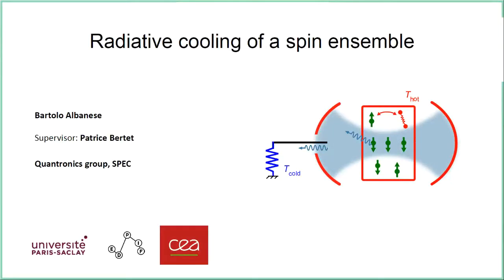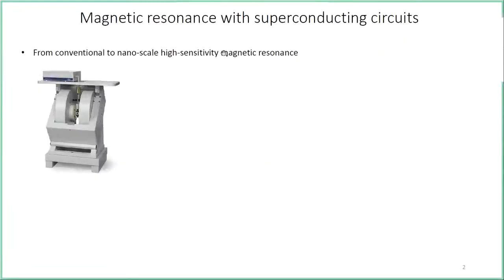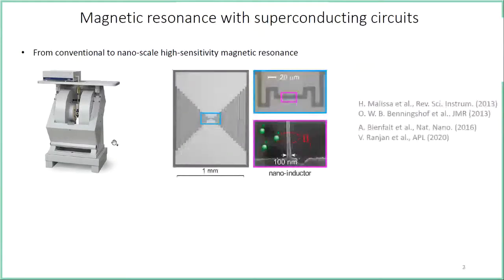The research project is based on the idea of using superconducting circuits to do magnetic resonance experiments. The original motivation is that we can increase the sensitivity of a standard spectrometer by replacing its setup with one based on a superconducting resonator that can have a micrometric or even nanometric inductor, allowing us to detect even a few spins in a single experiment.